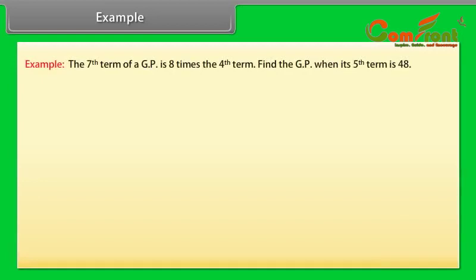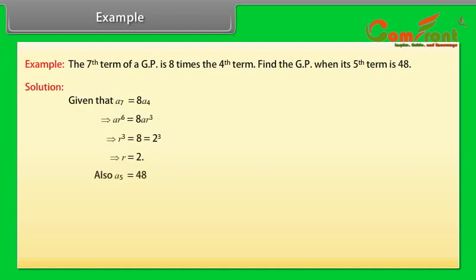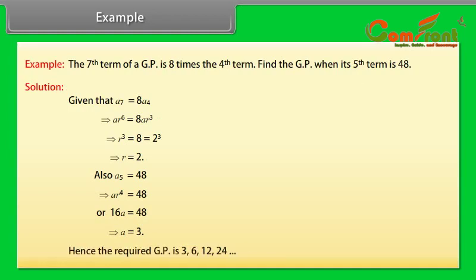Example: The 7th term of a GP is 8 times the 4th term. Find the GP when its 5th term is 48. Solution: Given A₇ = 8×A₄, which gives A×R⁶ = 8×A×R³, so R³ = 8 = 2³, therefore R = 2. Also A₅ = 48, so A×R⁴ = 48, meaning 16×A = 48, giving A = 3. Hence the required GP is 3, 6, 12, 24, and so on.